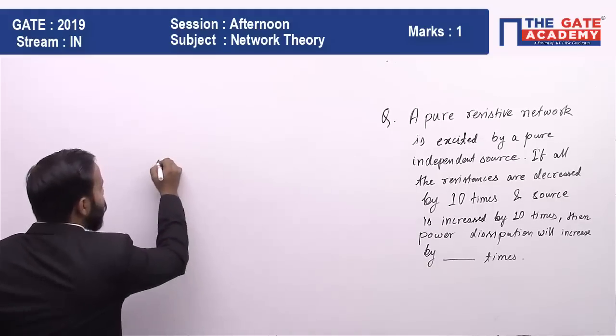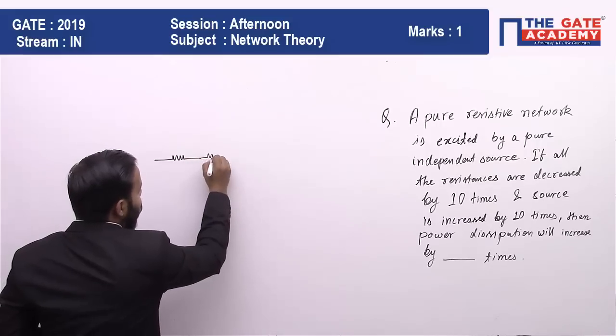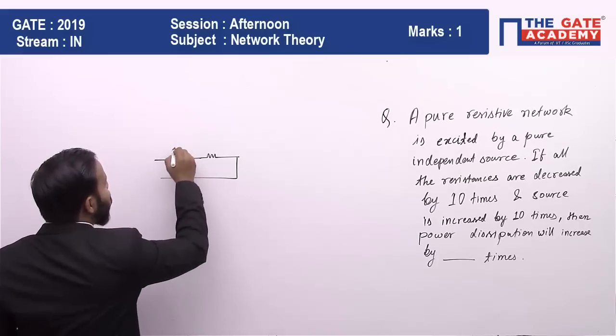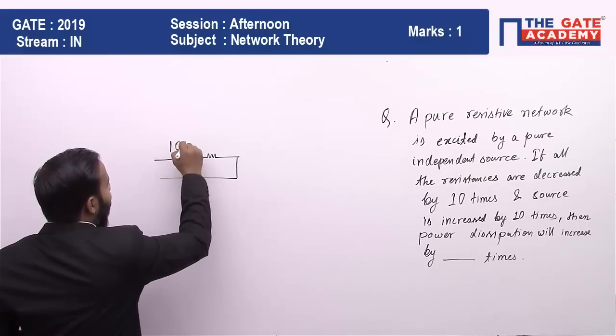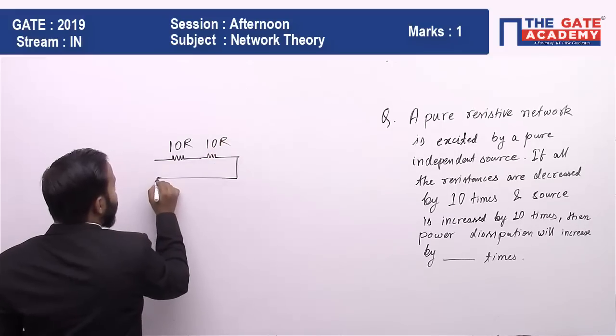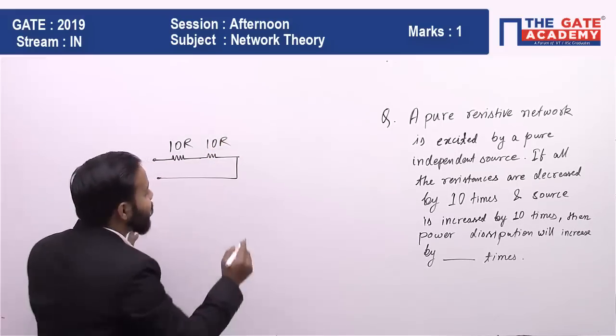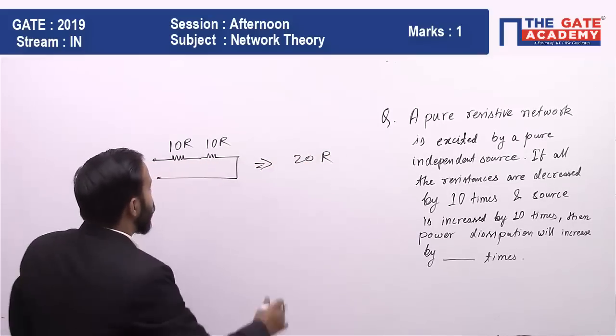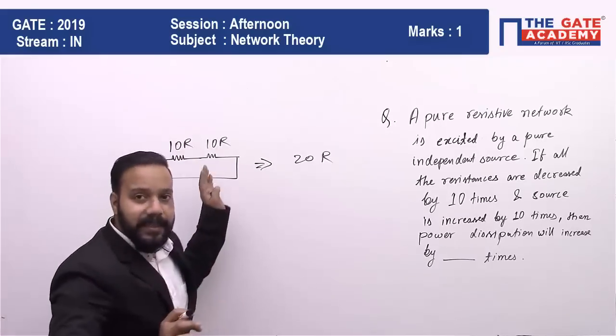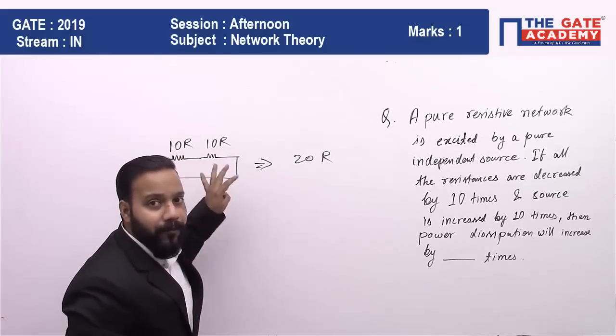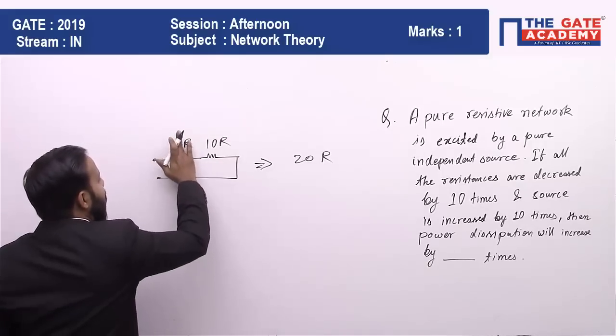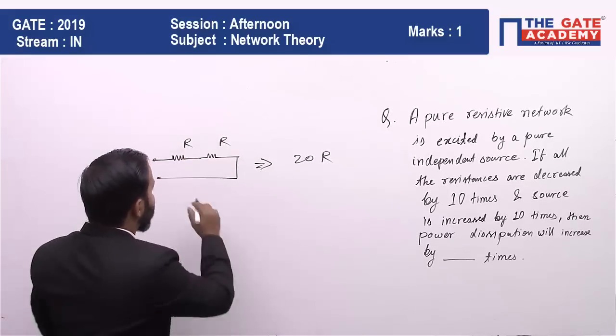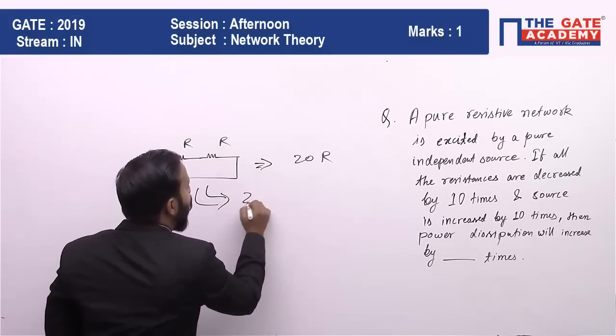To solve this, we have to understand something. Suppose we have two resistors in series, say 10R and 10R, so total resistance in series equals 20R. Now, if we decrease both of them by 10 times, we get R and R, so again we get 2R. You can see the equivalent resistance in both cases - if we are decreasing both by 10 times, it affects the equivalent resistance.